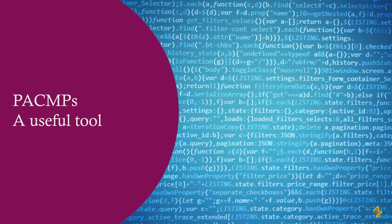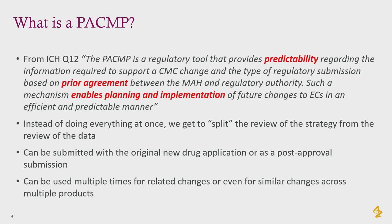So what is a PACMP? It's a very useful tool. From Q12, the PACMP is a regulatory tool that provides predictability regarding the information required to support a CMC change and the type of regulatory submission, based on prior agreement between the marketing authorisation holder and the regulatory authority. Such a mechanism enables planning and implementation of future change in an efficient and predictable manner.